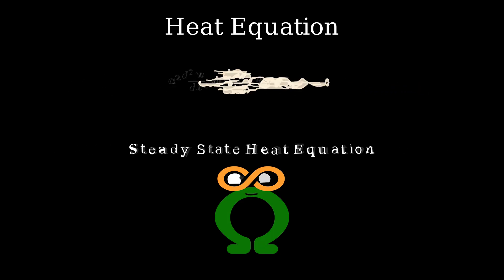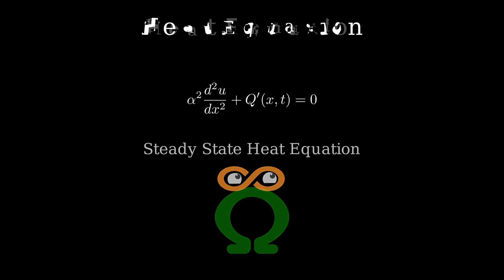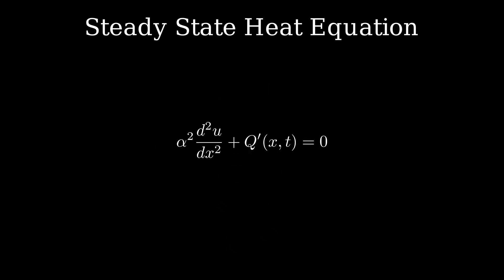We can achieve this final steady state solution directly by solving an alternative equation. We can get that equation by just setting the derivative with respect to time to zero. By the way, this equation is known as steady state heat equation. For a moment, assume alpha and q are one. Now we can easily solve this equation by integrating it twice.